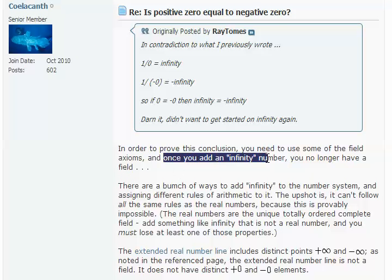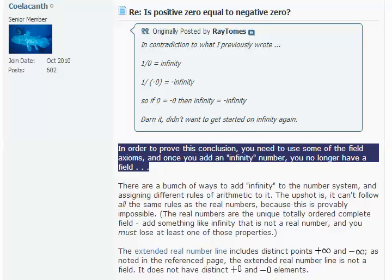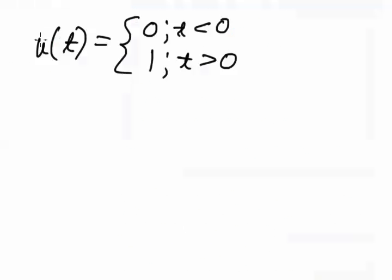Spalekanth says that once you add in an infinity you no longer have a field. But we don't have to have infinity to make this an important argument. The unit step function for instance is defined as 0 where t is less than 0 or 1 where t is greater than 0.